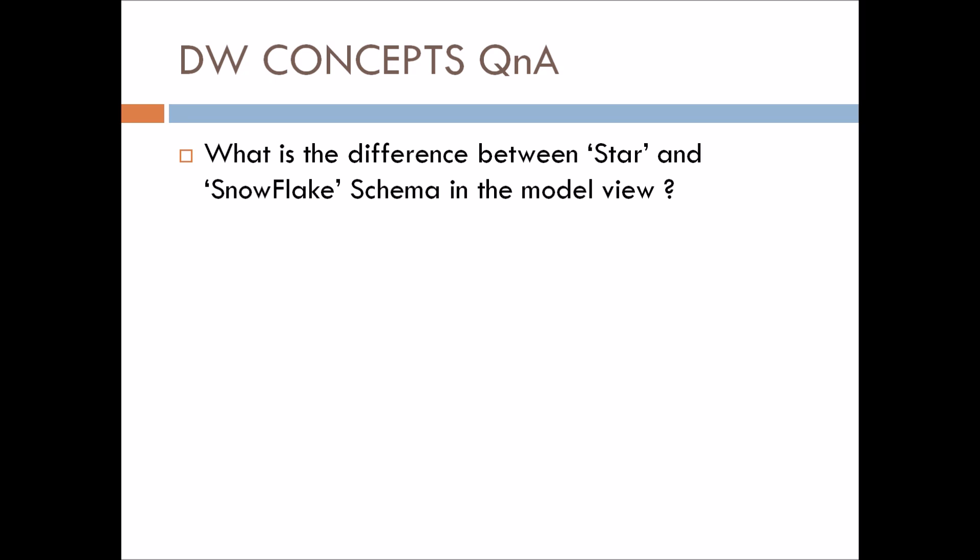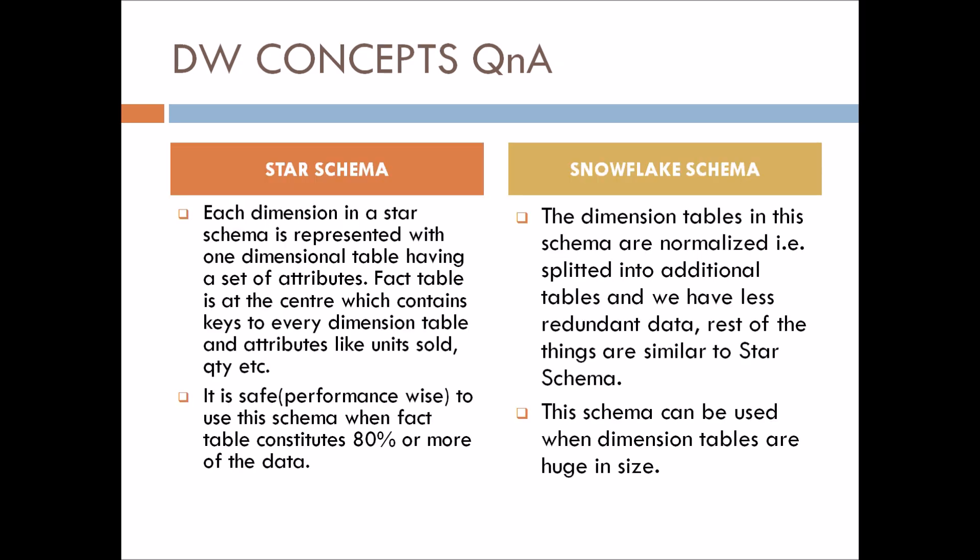The next question: what is the difference between star and snowflake schema in the model view? For star schema, each dimension is represented with one dimensional table having a set of attributes. The fact table is at the center, containing keys to every dimension table and measure attributes like units sold, quantity, etc.